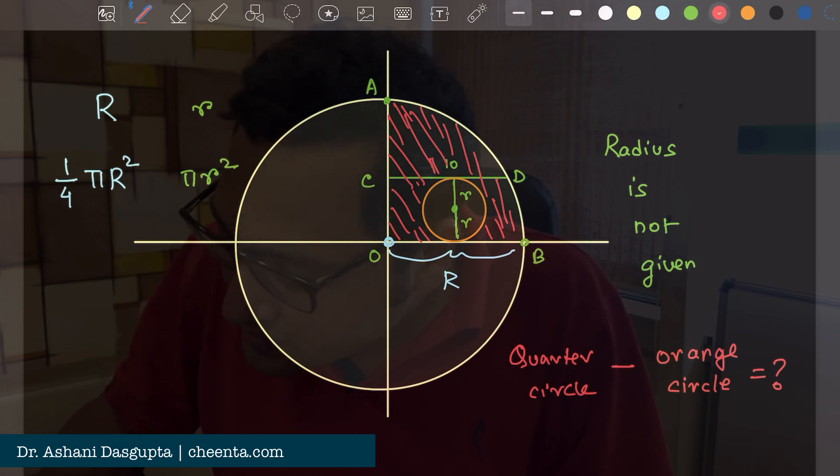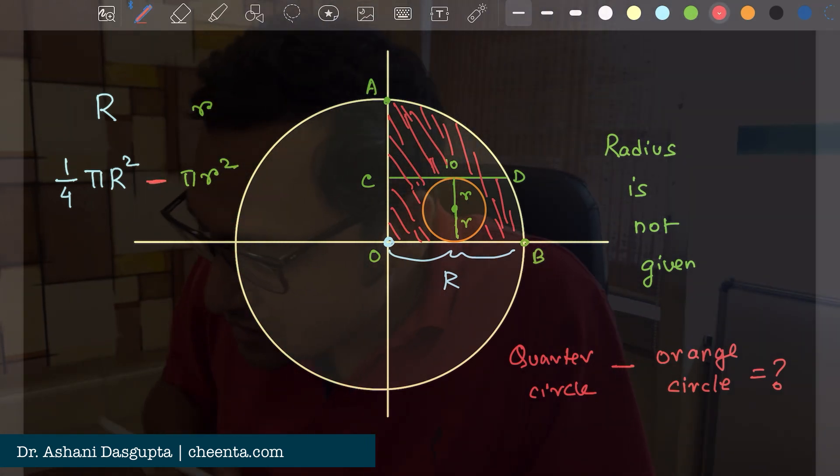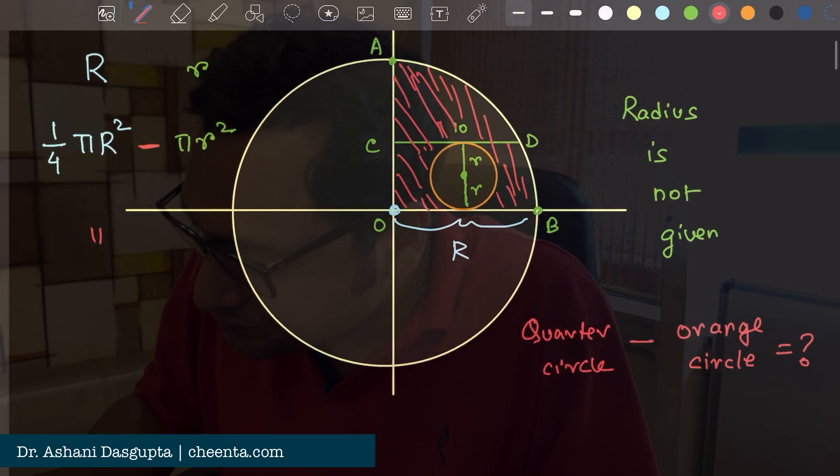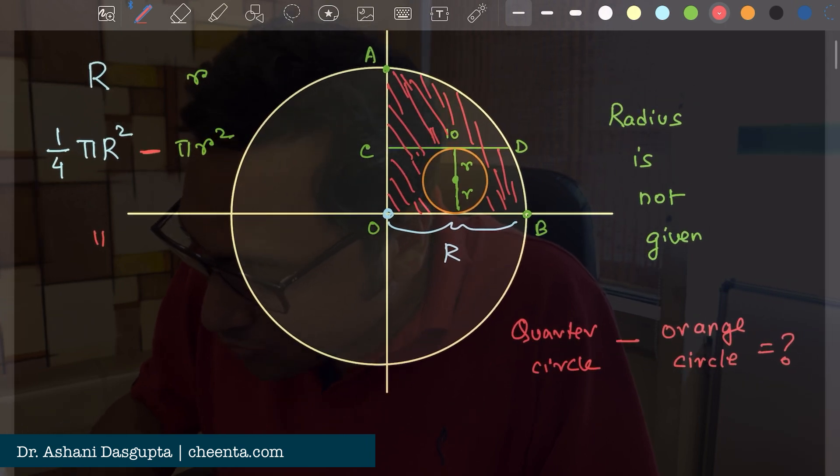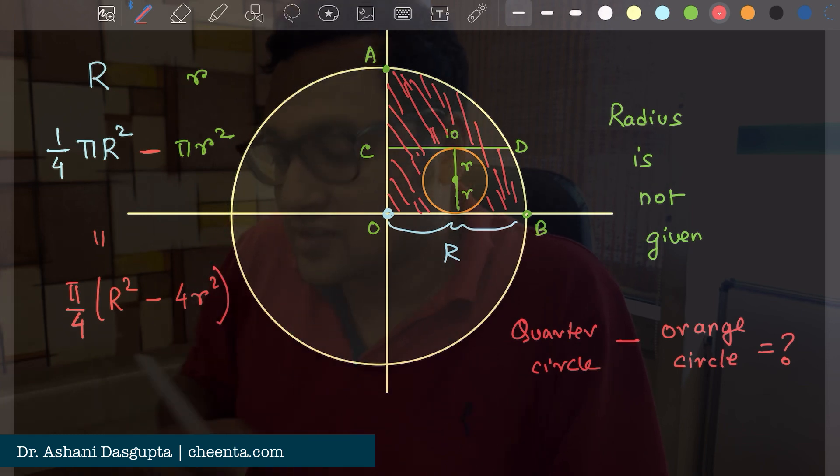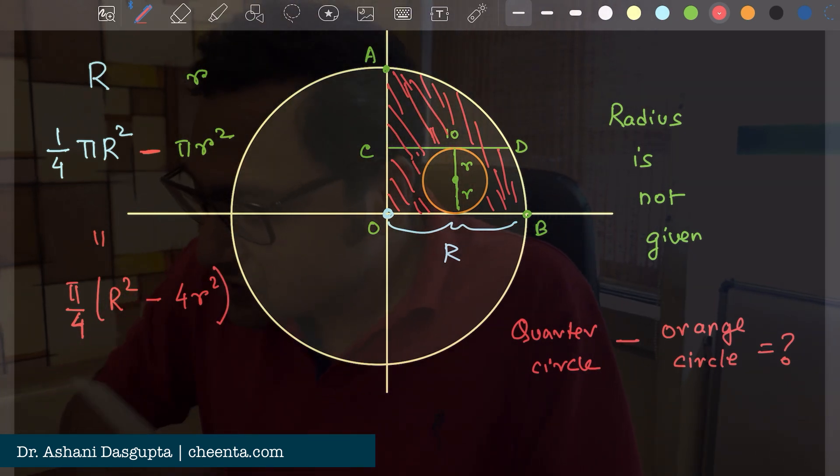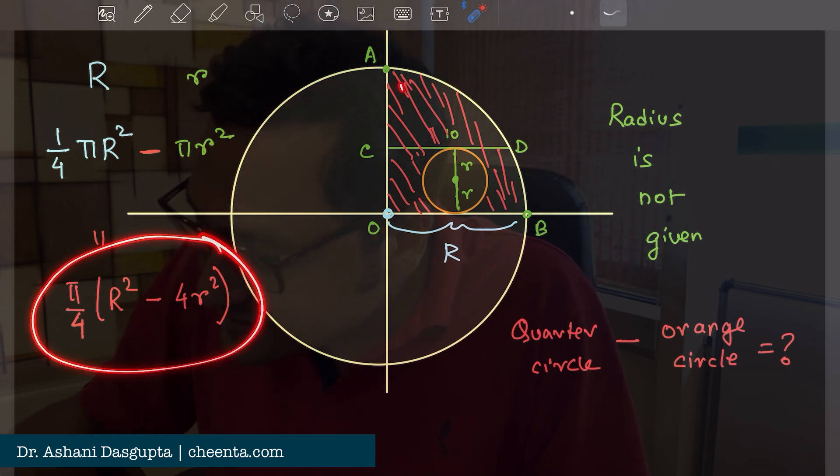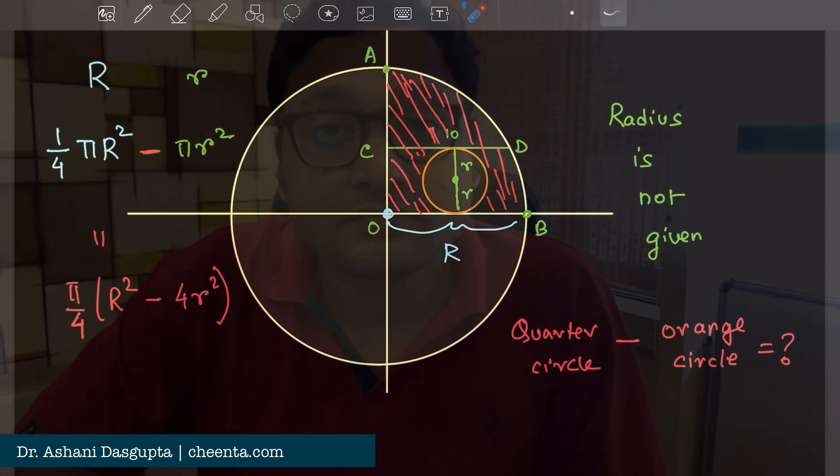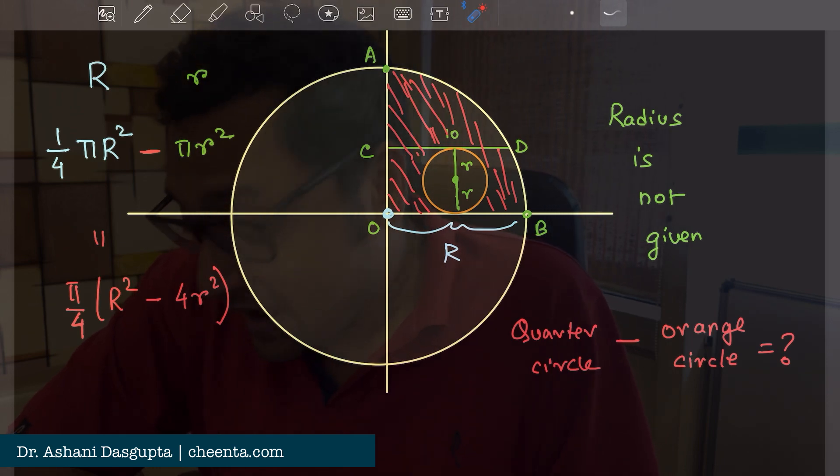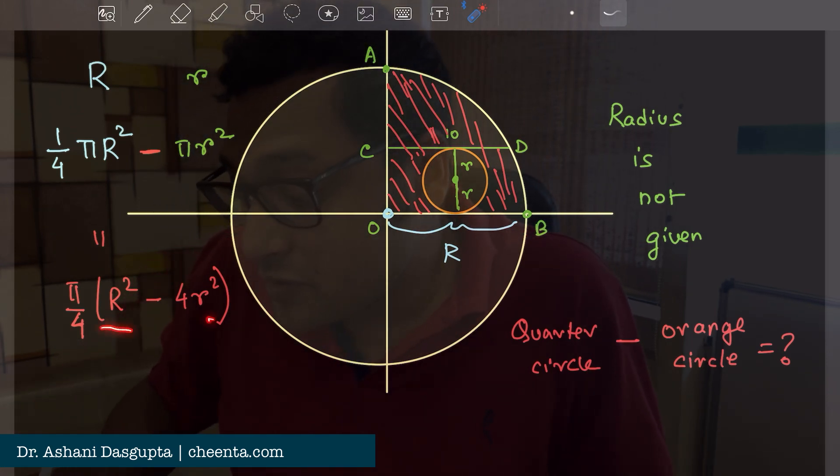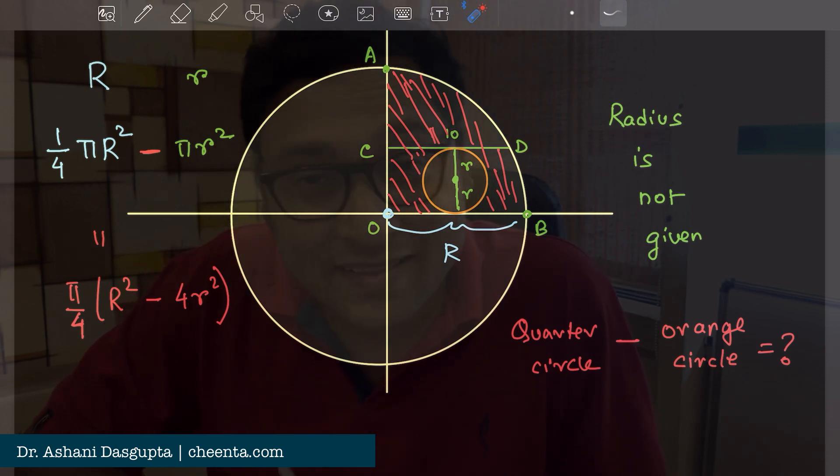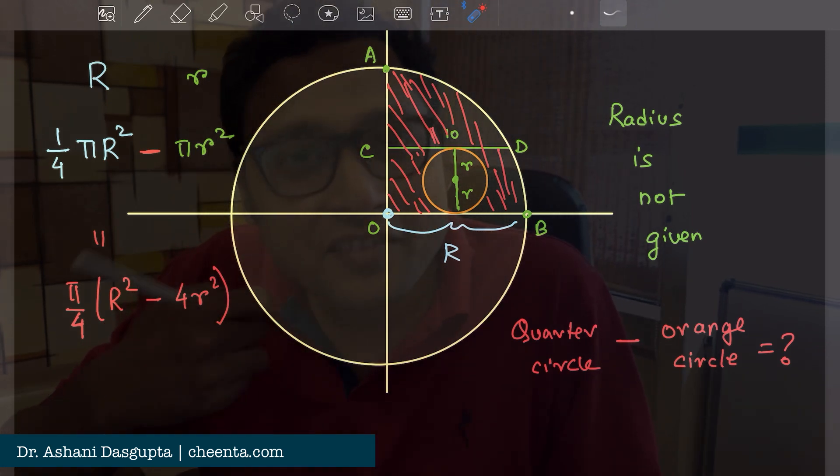You want to find out the difference between these two. In other words, what you want is π/4 times (capital R squared minus 4r squared). If you can find out this quantity, that is the area that you need. The problem here is we don't know capital R, we don't know small r. But that's not needed, actually. That's the fun of this problem.